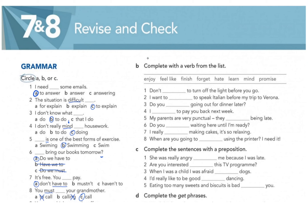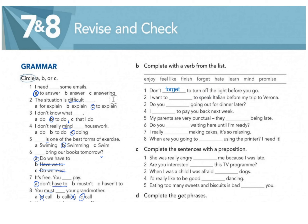Exercise B: complete with a verb from the list. Number one: 'Don't forget to turn off the light before you go.' Number two: 'I want to learn to speak Italian before my trip to Verona' — 'learn' is the answer.